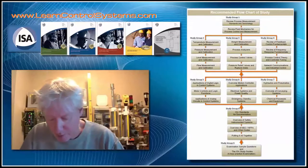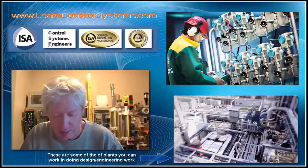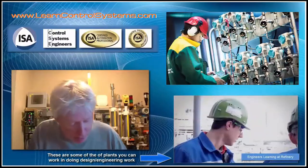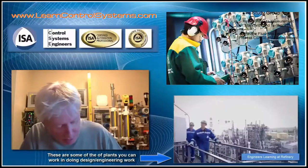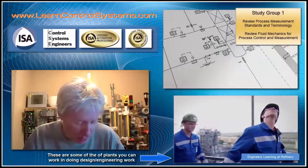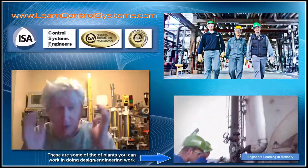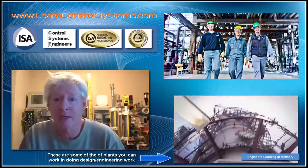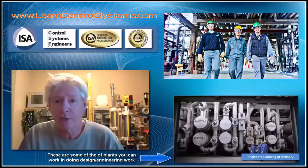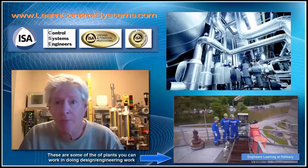We'll be covering, first, a review of process measurement standards and terminology. We'll look at what processes are and what we're trying to accomplish, different types of processes. We'll look at different kinds of process plants — petrochemical, chemical, pharmaceutical, power, and pulp.